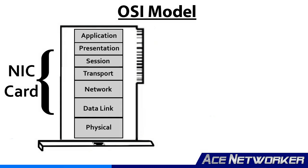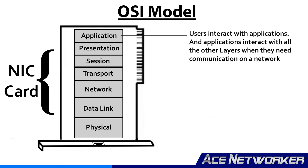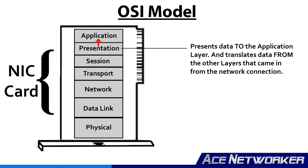So what are the seven layers? The top layer is the application layer. This is the layer where users communicate and interact with the computer and applications, as well as where the applications interact with all the other layers of the OSI model over a network.